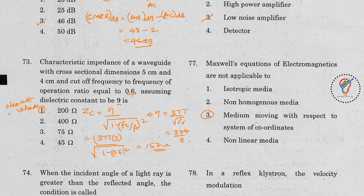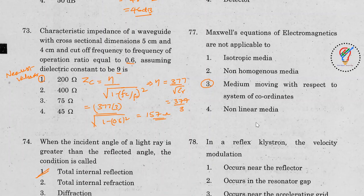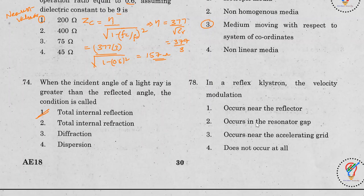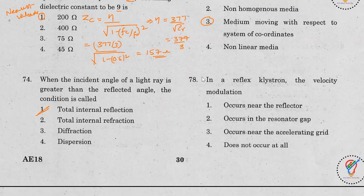Question 78: In the reflex klystron, velocity modulation occurs in the resonator gap. The options were: near the reflector, in the resonator gap, near the accelerating grid, or does not occur at all. The correct answer is: occurs in the resonator gap.